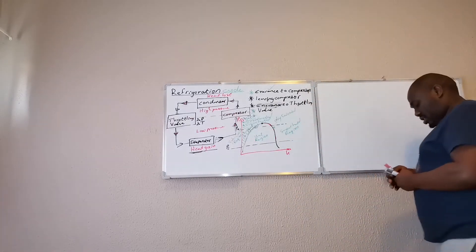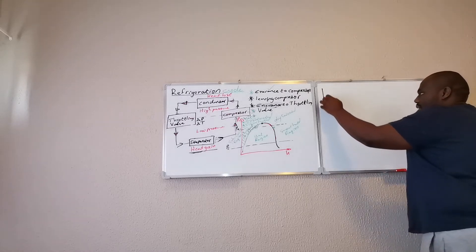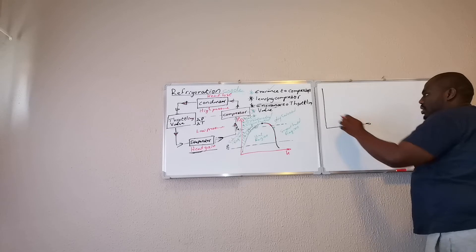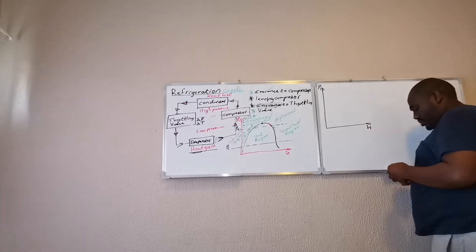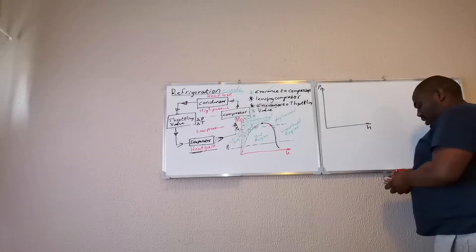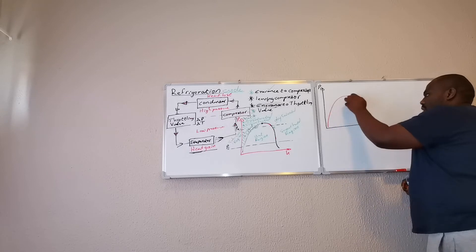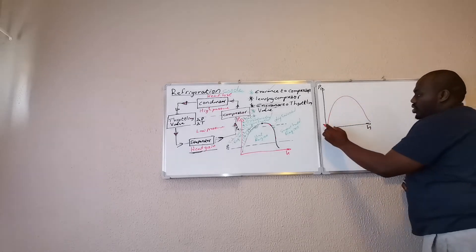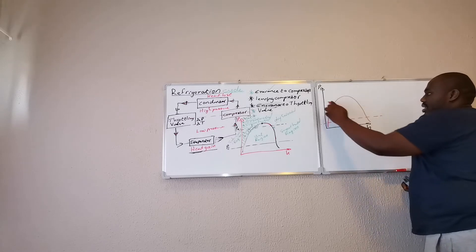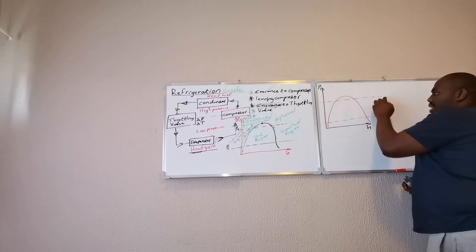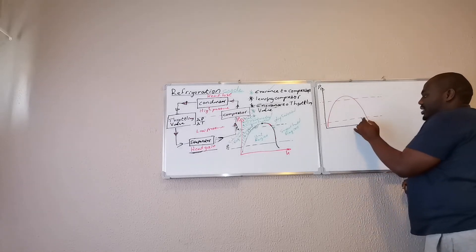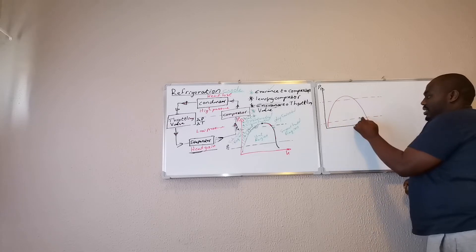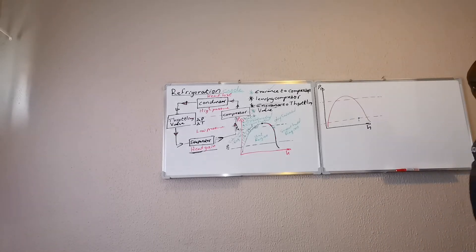Okay, so let's draw this diagram on a pressure versus enthalpy diagram. So, this is your low pressure line, your evaporator line. This is your high pressure line, your condenser line. So, my first assumption is that this refrigerant is entering wet at low pressure. So, my point would be there. Point one would be inside the wet region.